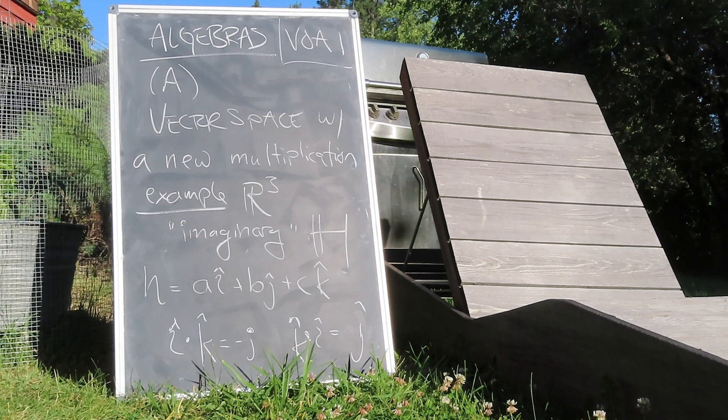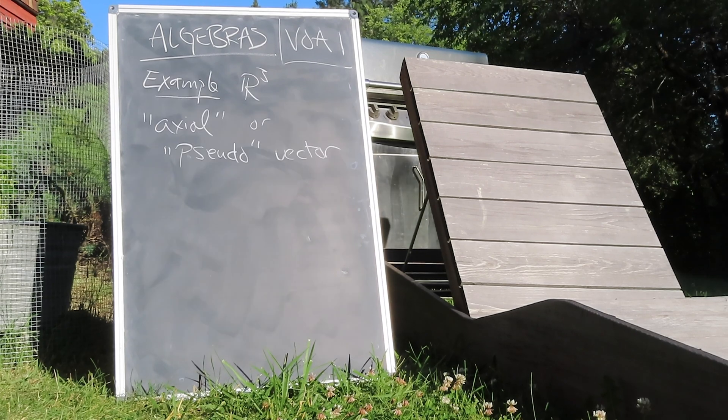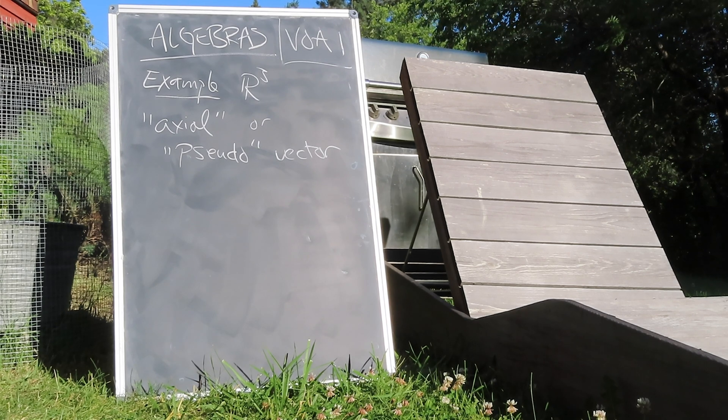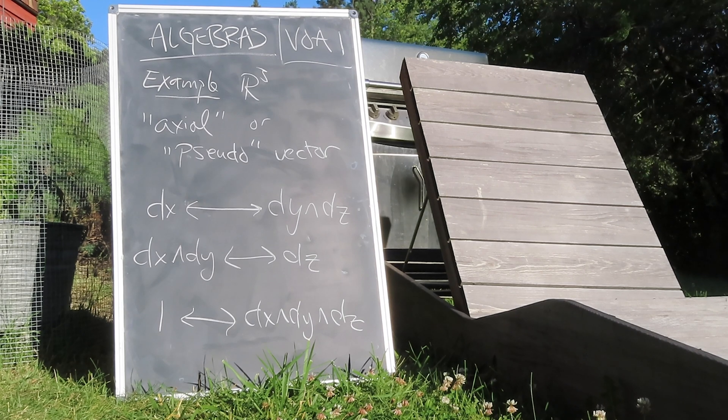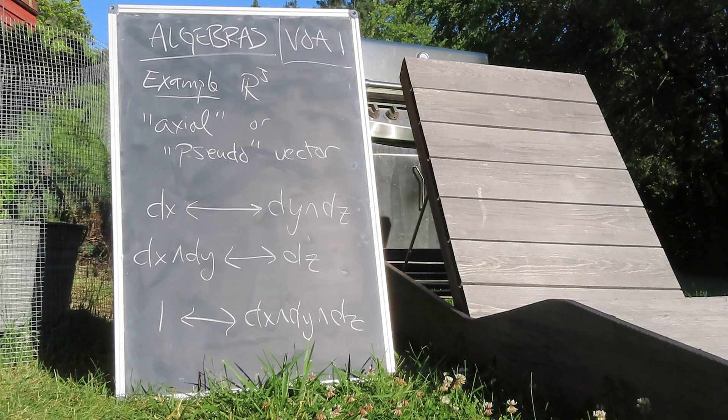Of course, a lot of cohomological lip service is often paid to the cross product using words like axial vector and so on, because it more naturally sits in an extended structure known as the exterior algebra. We'll see that too in time, but for now we can consider the happy coincidence of three dimensions as a motivating example.